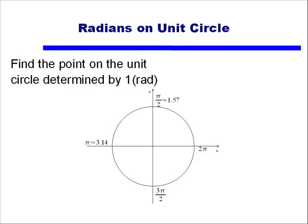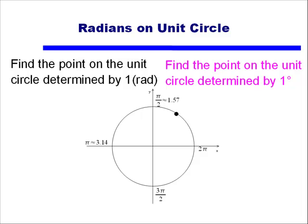Well, say I did want to look at what one radian is. Where would one radian fall? I'm guessing one radian would be about there. What if I also asked you to find the point on the unit circle determined not by one radian, but one degree? Well, one degree would be something like that. In fact that might even be too big.